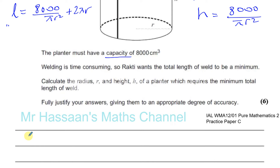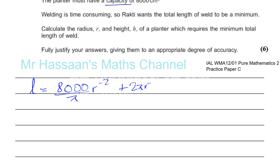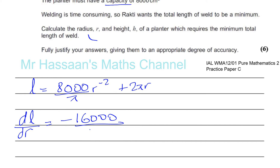Rearranging to make differentiation easier: L = (8,000/π) × R⁻² + 2πR. Differentiating with respect to R: dL/dR = −16,000/(π) × R⁻³ + 2π. That is, dL/dR = −16,000/(πR³) + 2π. Differentiating 2πR with respect to R gives just 2π, since R to the power of 0 is 1.